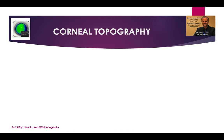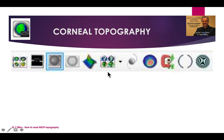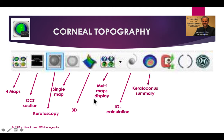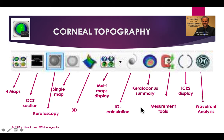In corneal topography we can have the four maps display, OCT section, keratoscopy, single map, 3D display, multi-maps display, eye wall calculation, keratoconus summary display, some measurement tools, glaucoma display, intracorneal ring segment display, and wavefront analysis.